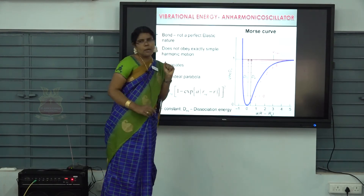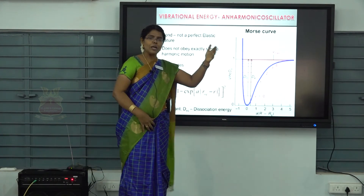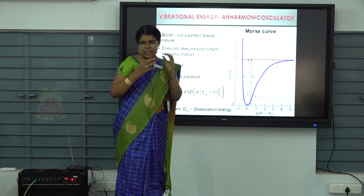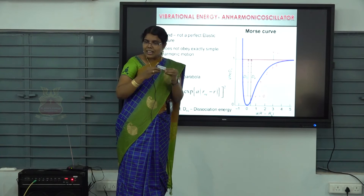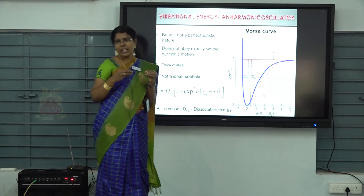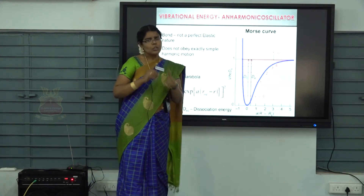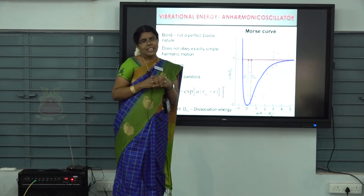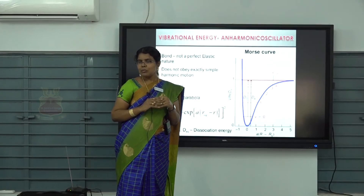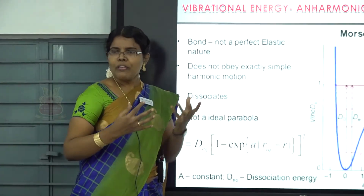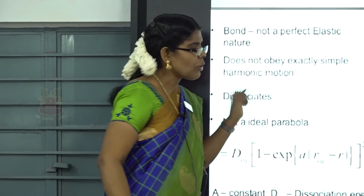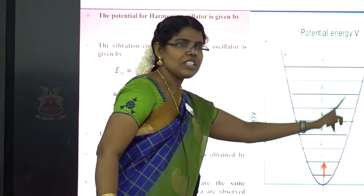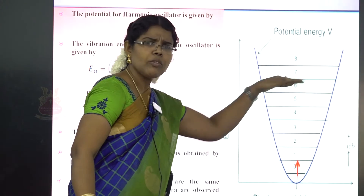Next, we study the vibrational energy of an anharmonic oscillator. Real molecules do not obey Hooke's law and do not exhibit simple harmonic motion — they undergo anharmonic oscillation. Therefore, the potential of an anharmonic oscillator is not a symmetric parabola but an asymmetric curve, unlike the harmonic oscillator where all energy levels are equally spaced.